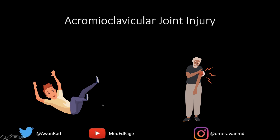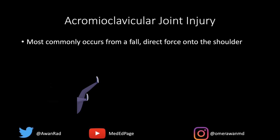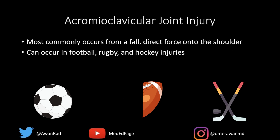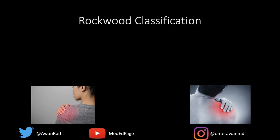Acromioclavicular joint injury most commonly occurs from traumatic situations like a fall or a direct force onto the shoulder. This is very common in sports injuries like football, rugby, even hockey. Usually it's going to present with pain — patients are going to feel that there is a problem. This doesn't typically present asymptomatically.